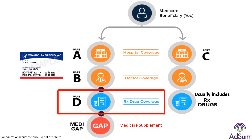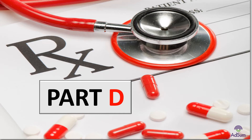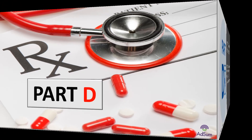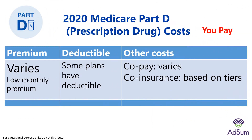Once you have Original Medicare and Medicare Supplement — which pays for the balance of Parts A and B — you still need prescription drug coverage. When you choose a Medicare Supplement option, you will need to buy a standalone prescription drug coverage. Part D helps with the cost of prescription drugs and is offered by Medicare-approved private insurance companies. Anyone with Part A and/or Part B can qualify to buy a standalone Part D. The premium for Part D varies by provider; some plans have a deductible and the co-pay and co-insurance also vary. Given the high cost of drugs, it is well worth the effort to research and manage costs.